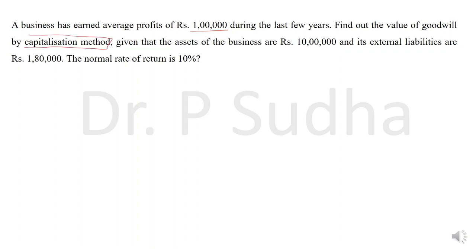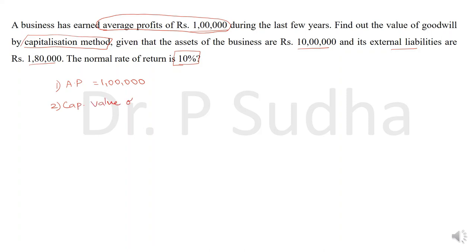Given that the assets of the business are 10 lakhs, its external liabilities are 1 lakh 80,000, and the normal rate of return is 10%. As usual, follow step by step. The first step: average profit is given directly as 1 lakh. The second step: capitalized value of average profit equals average profit into 100 divided by normal rate of return — 1 lakh into 100 divided by 10 gives 10 lakhs.